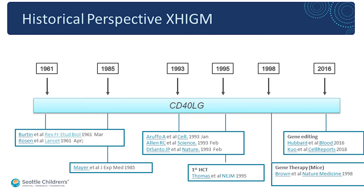Once the gene was discovered, the first transplant occurred in 1995 — a successful transplant done by the group in France. It trickled along with case reports and then small series. Today the current available cure for this condition is bone marrow transplantation, or hematopoietic cell transplant.